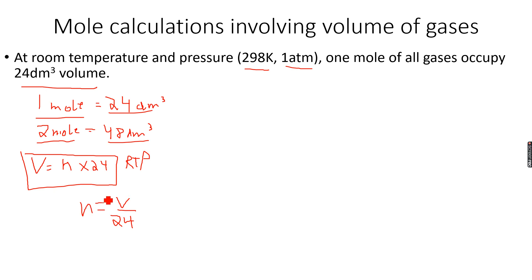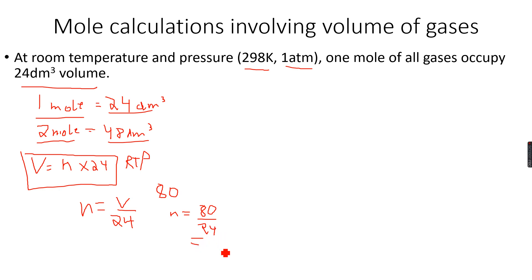We rearrange to make n the subject: n equals V over 24. For example, if the volume is 80 dm³, then n equals 80 over 24, which gives 3.33 moles. So if a gas occupies 80 dm³ at room temperature and pressure, it means 3.33 moles of gas are present in the container.